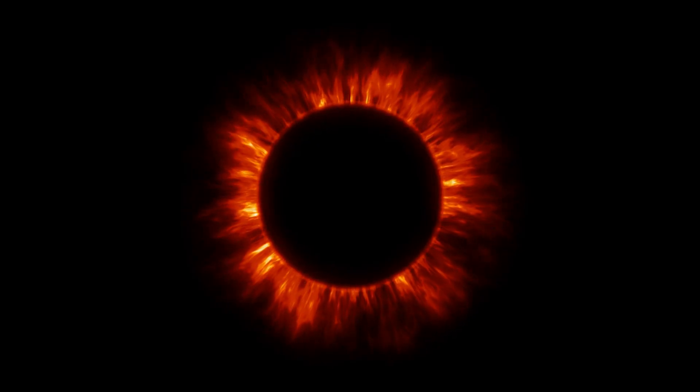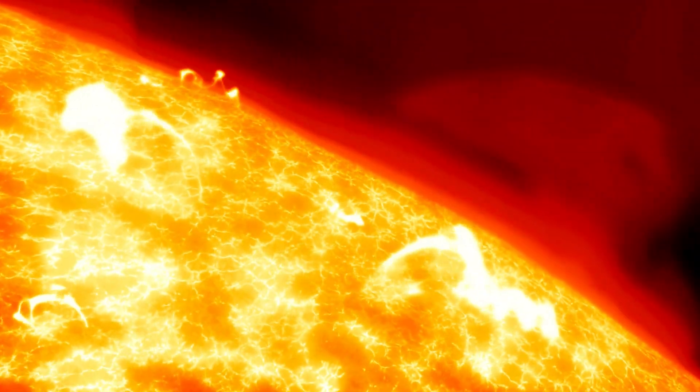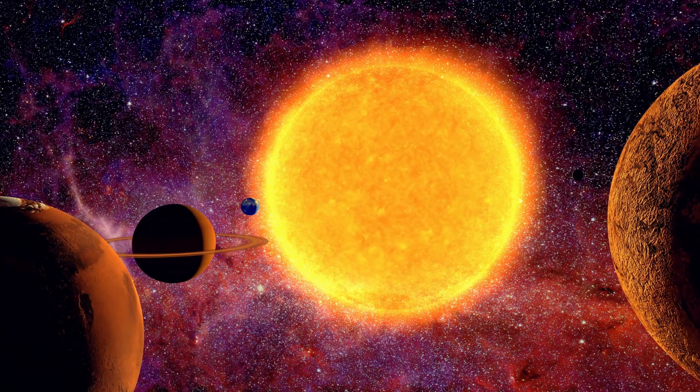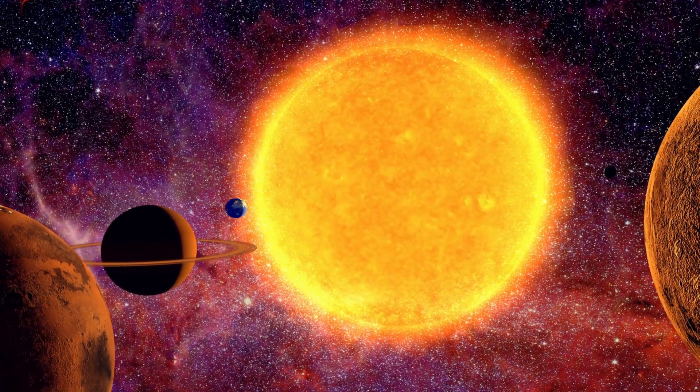Our sun, however, has its unique endgame. As it reaches the twilight of its life, it will transform into a red giant, expanding voraciously enough to consume Mercury, Venus, and, tragically, Earth.